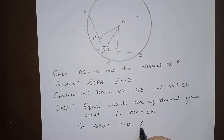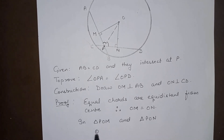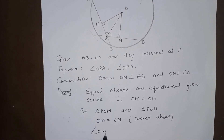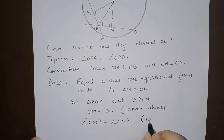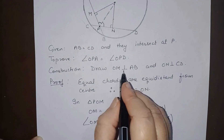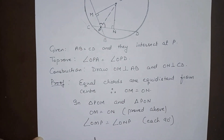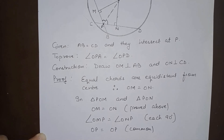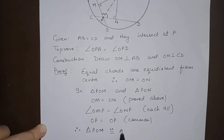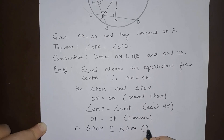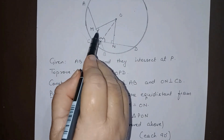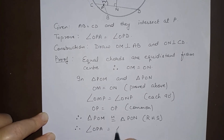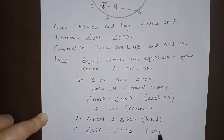Now in triangle POM and triangle PON: OM is equal to ON, proved above. Each angle is 90 degrees, as OM is perpendicular on AB and ON is perpendicular on CD. OP is equal to OP, which is common. Therefore triangle POM is congruent to triangle PON by RHS — right angle, hypotenuse, side. Therefore angle OPM is equal to angle OPN by CPCT. Hence proved.